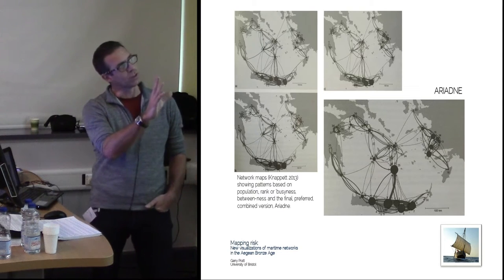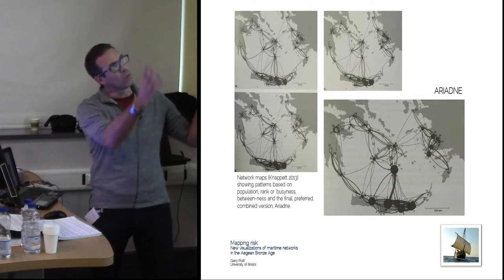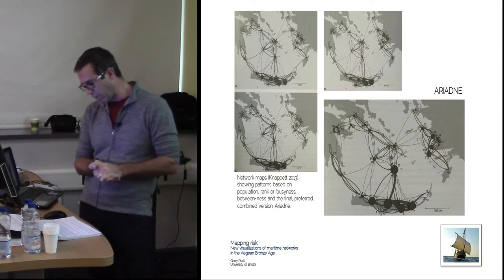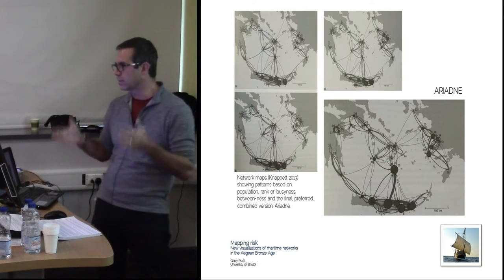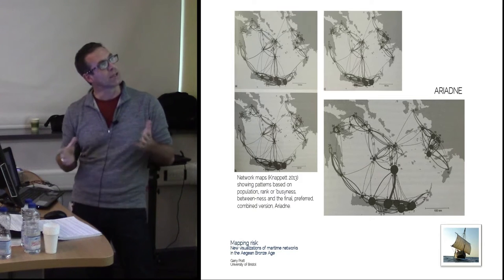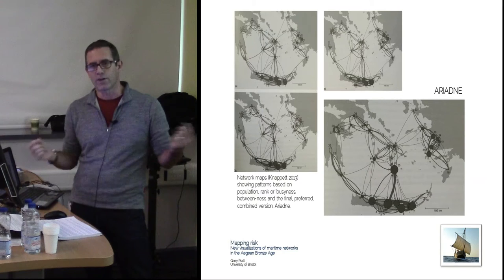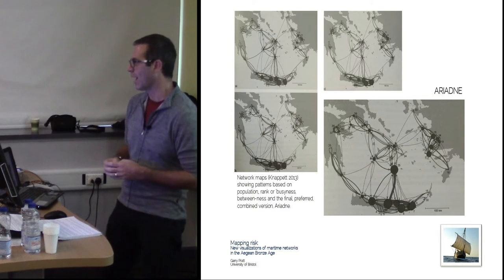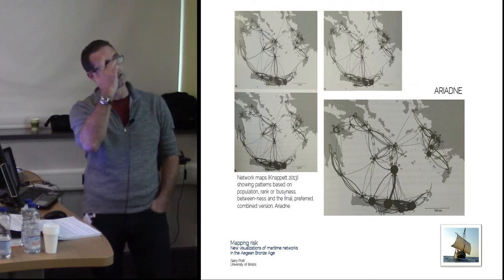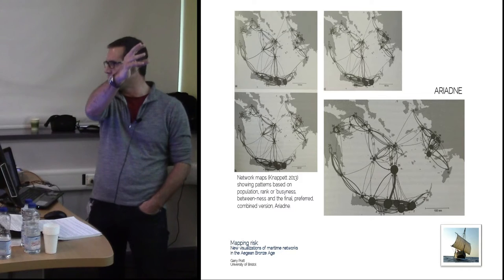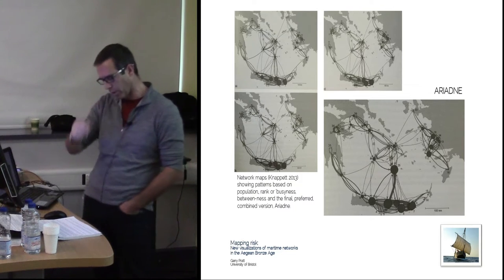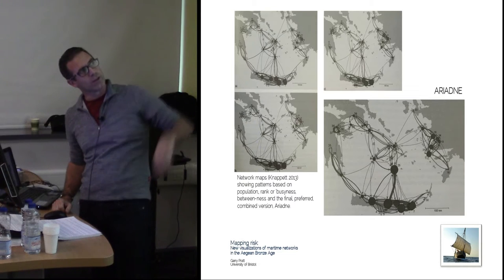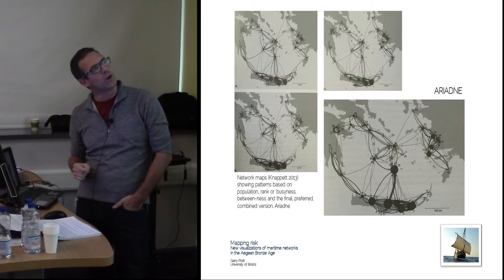Knappit, Evans and Rivers' work developed through quantitative and spatial modelling, culminating in a final model called Ariadne. The input parameters included fixed local resources, the size of the population giving each site a carrying capacity, and distance — which they acknowledged was not very useful, being just Euclidean distance between sites. It was also omnidirectional: sailing from one site to another was treated the same as the reverse, which is simply not how maritime travel works.